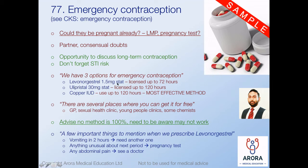There are three options for emergency contraception: levonorgestrel 1.5mg stat, ulipristal 30mg stat, and the copper IUD coil. Levonorgestrel is licensed up to 72 hours, ulipristal (EllaOne) is licensed up to 120 hours, and the copper IUD can also be used up to 120 hours. By numbers, the most effective method is the copper IUD coil. These can be obtained for free at GP surgeries, sexual health clinics, young people's clinics, and some chemists. Also counsel that this is not 100% effective - there is still a risk of pregnancy even if everything is done correctly.